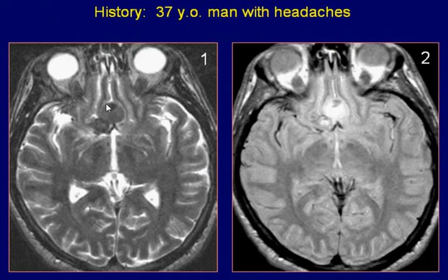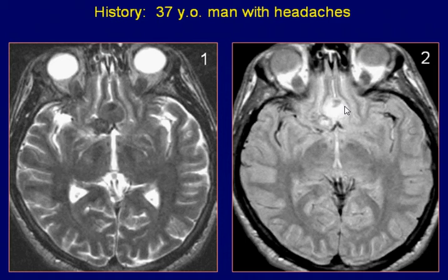The images demonstrate a well-defined, slightly heterogeneous lesion situated anterior to the third ventricle. The lesion is low signal on T2 and high signal on proton density images.